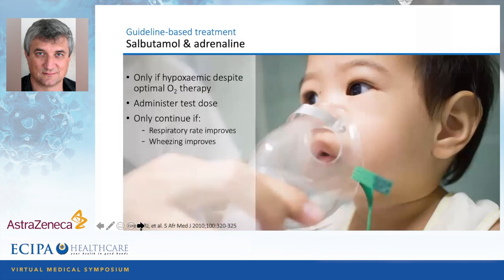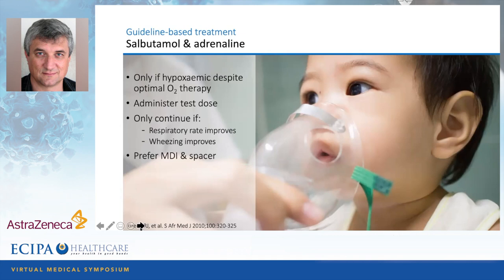Regarding salbutamol and adrenaline nebulization, we do leave some room for it, but it must be emphasized this happens in hospital with an oxygen-driven nebulizer — not with a home electronic nebulizer. We only do it if the patient is hypoxemic despite optimal oxygen therapy, such as nasal prong oxygen at two to three liters per minute. We administer a test dose of salbutamol or adrenaline as inhalation and continue if respiratory rate, wheezing, and saturation improve. If we offer a bronchodilator, it's always preferred to use a metered-dose inhaler with a spacer, as that offers better small airway deposition than a nebulizer.